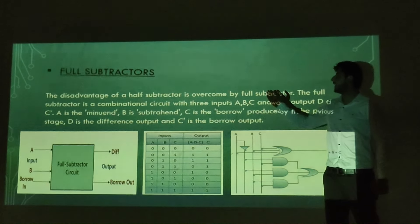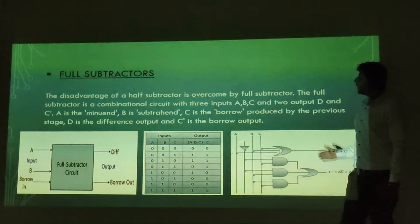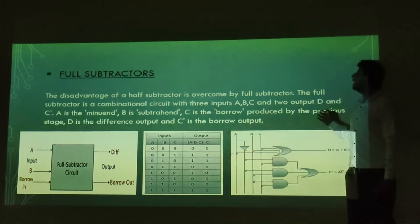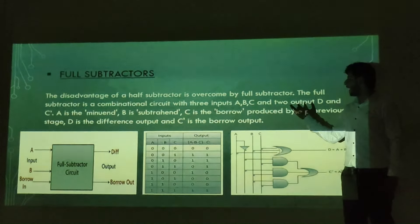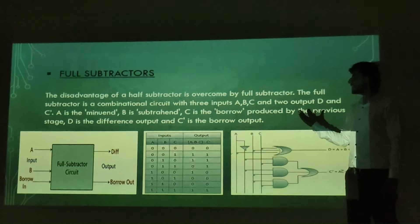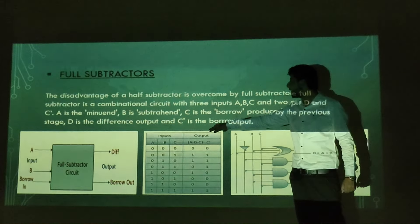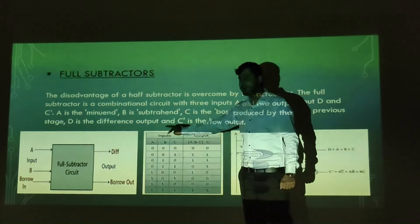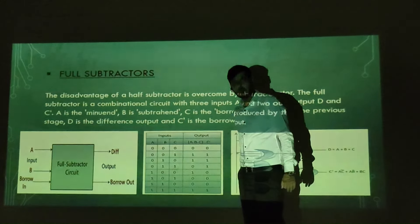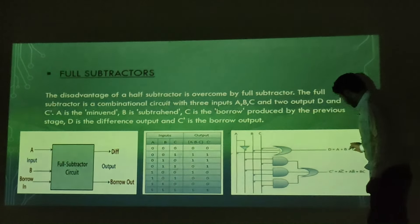The next is the full subtractor. The disadvantage of the half subtractor is overcome by the full subtractor. The full subtractor is a combinational circuit with three inputs A, B, and C, and two outputs D and borrow. A is the minuend, B is the subtrahend, and C is the borrow from the previous stage. D is the difference output and the other output is the borrow. The diagram shows three inputs A, B, and borrow-in, with two outputs: difference and borrow-out. This is the truth table and the Boolean diagram of the full subtractor.